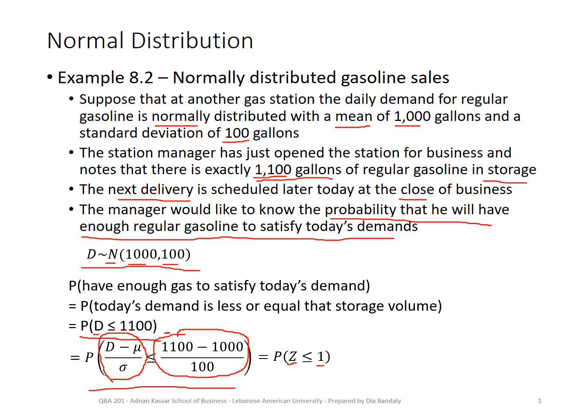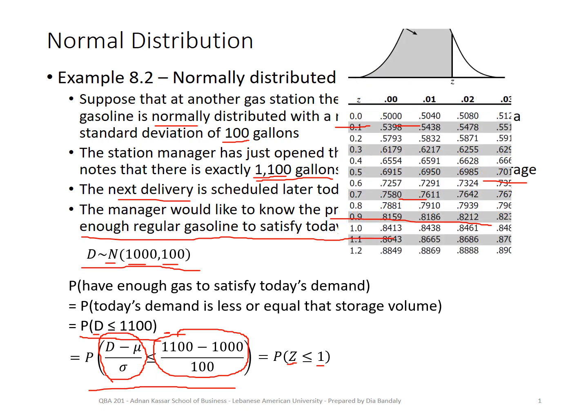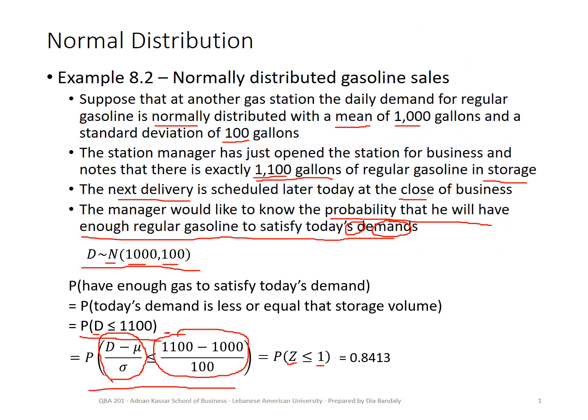This probability statement is now equal to P(Z ≤ (1100 − 1000) / 100) = P(Z ≤ 1). So we go look in the Z-table for P(Z ≤ 1). Here is an extract of the Z-table — we want Z equal to 1, so we look up the row for 1.0 and the column for 0.00. This area is our final answer: the probability that you will have enough gas to satisfy today's demand. I hope you understood this problem — it has very good context and is good practice for reading the Z-table.